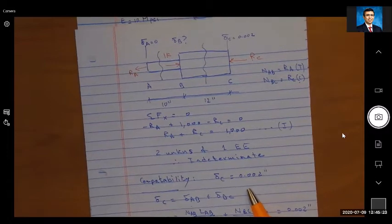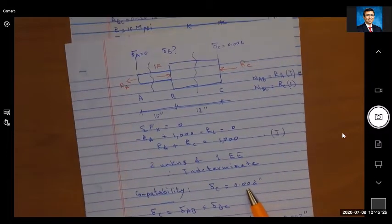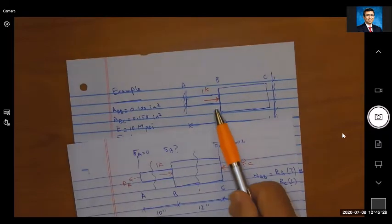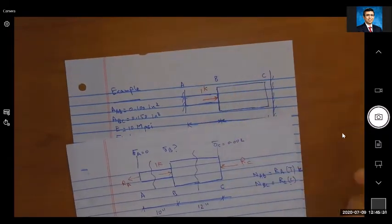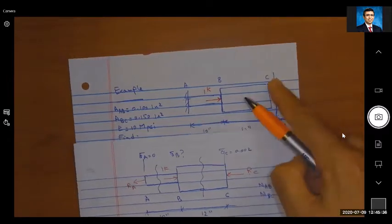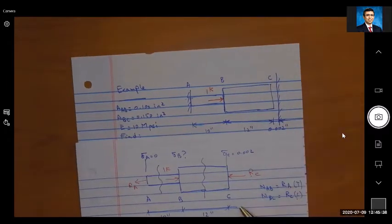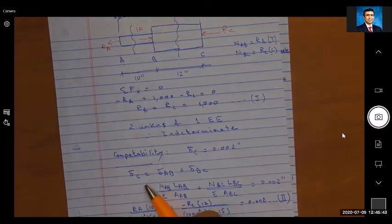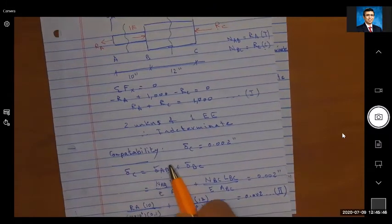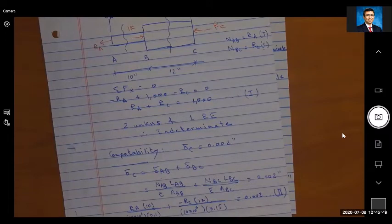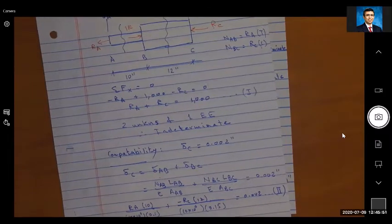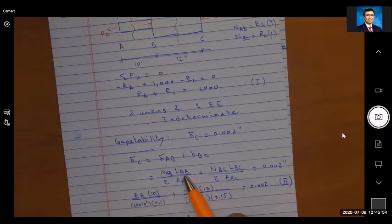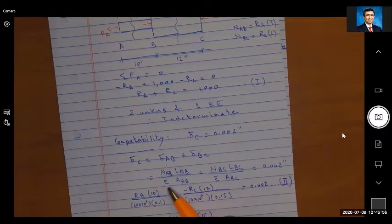Now where is this compatibility equation going to come from? It's going to come from the fact that at the end of the day, when AB and BC both change in length, that total change must be equal to 0.002. So I can write here my compatibility equation: delta C, the displacement at C, is equal to the total elongation of AB and BC, the sum.